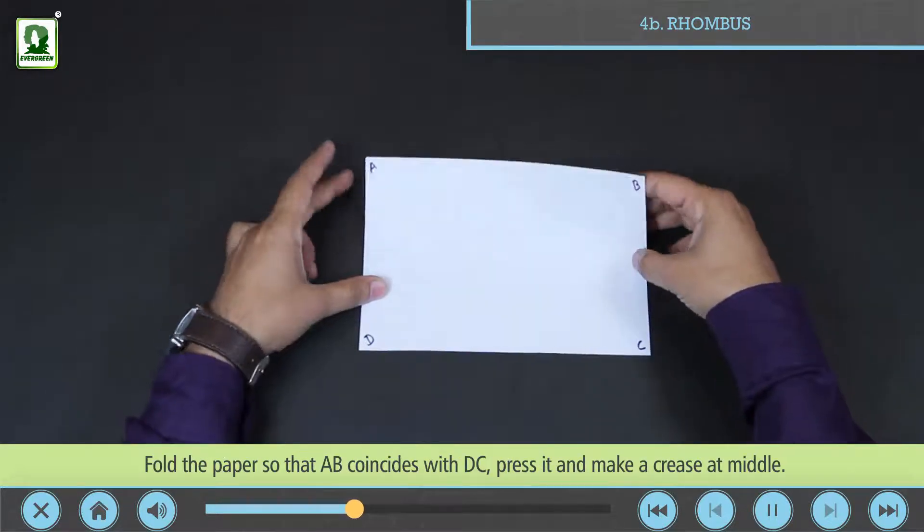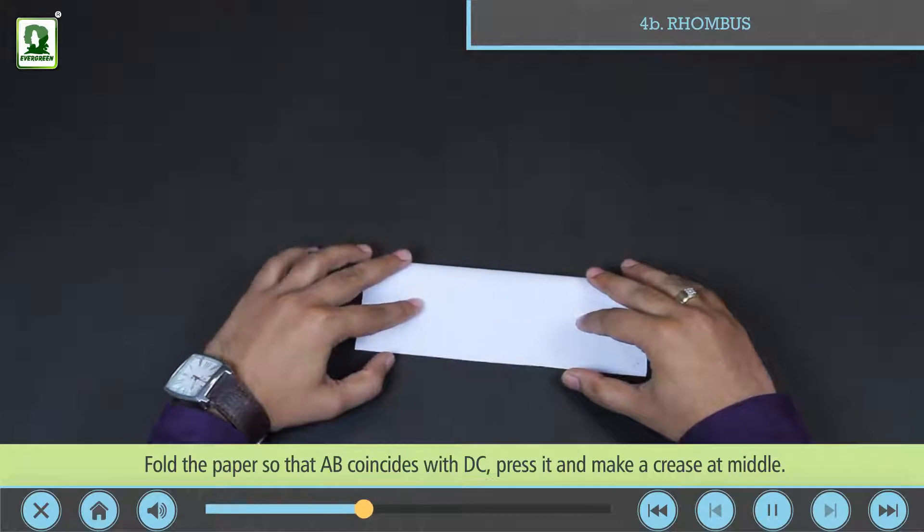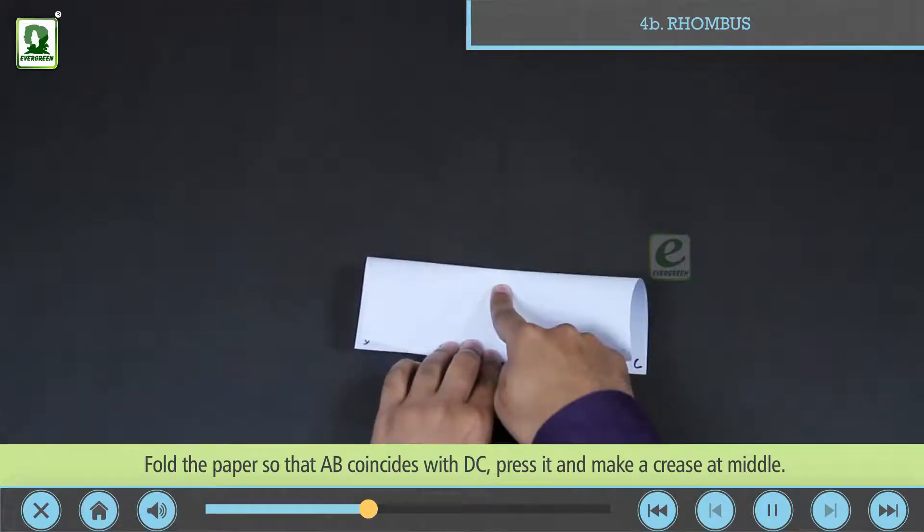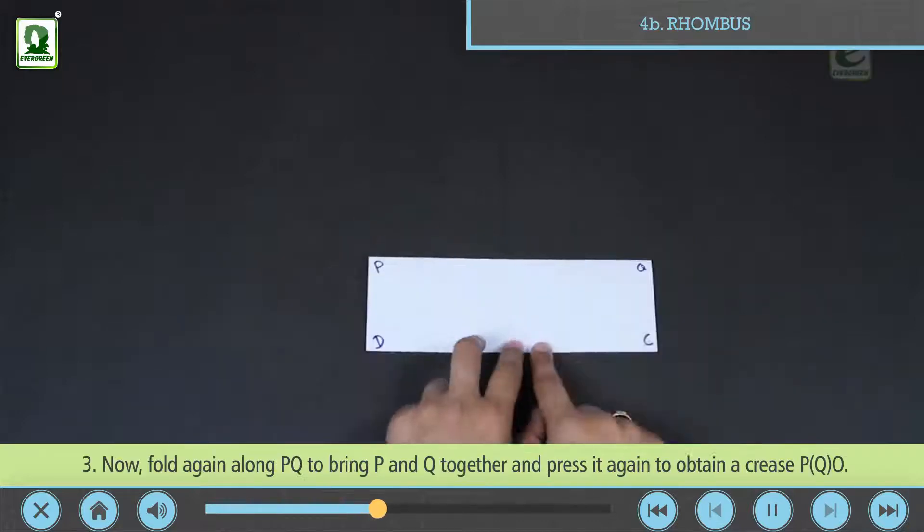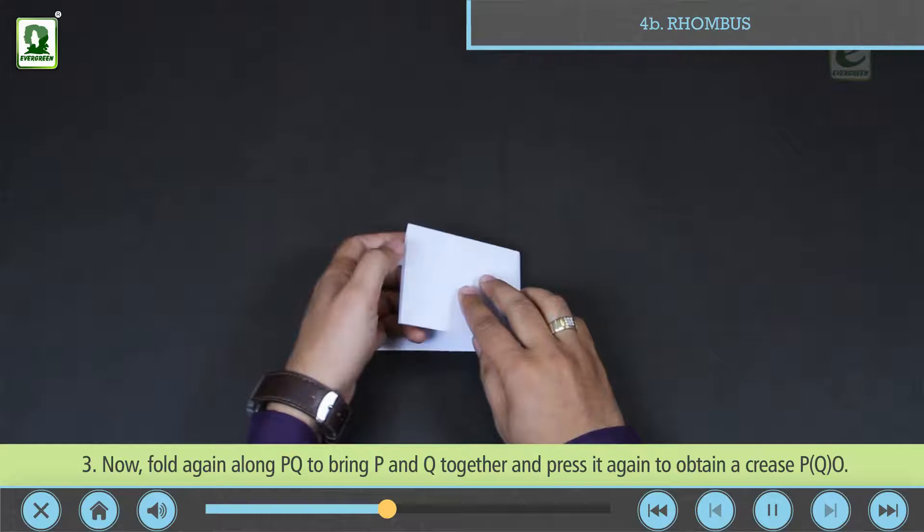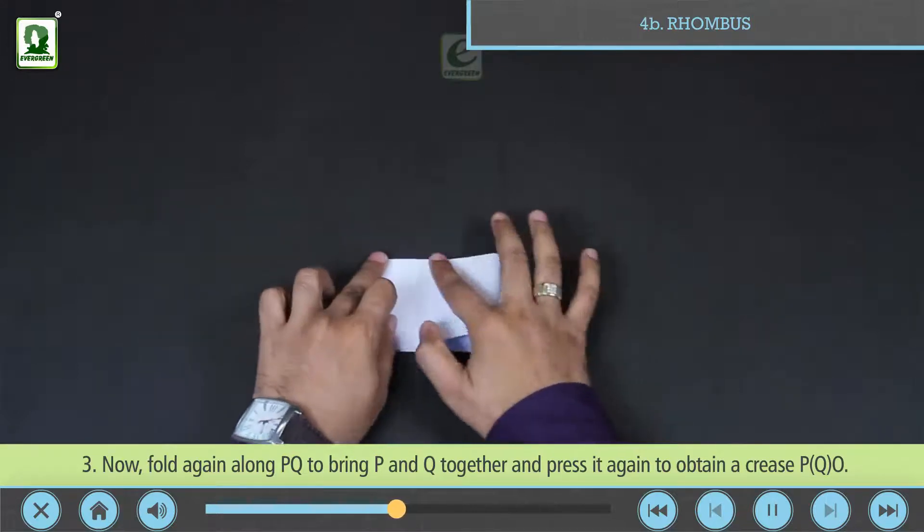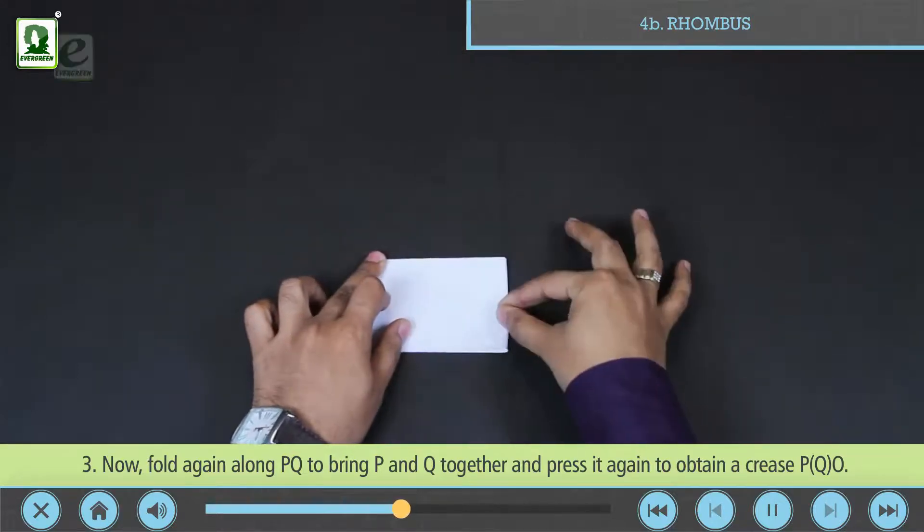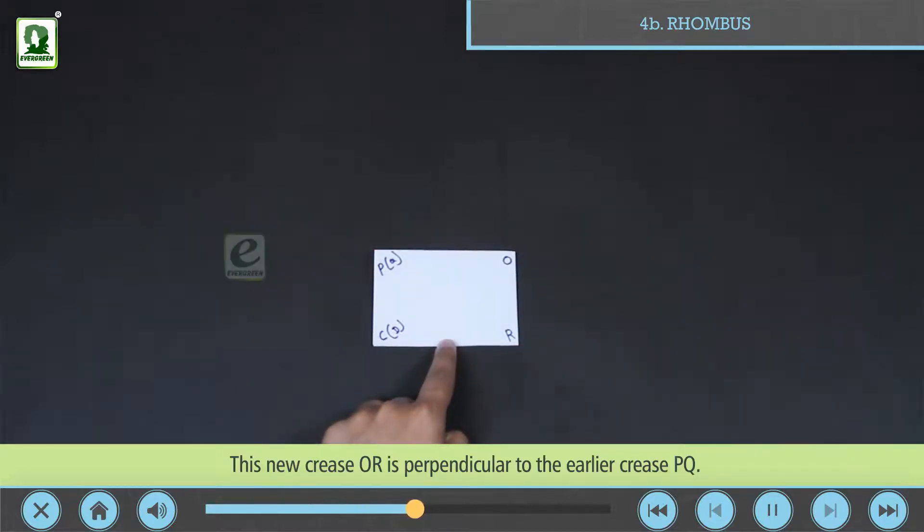Fold the paper so that AB coincides with DC. Press it and make a crease at the middle. Now fold again along PQ to bring P and Q together and press it again to obtain a crease. This new crease OR is perpendicular to the earlier crease PQ.